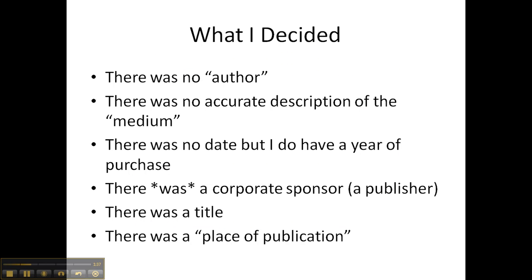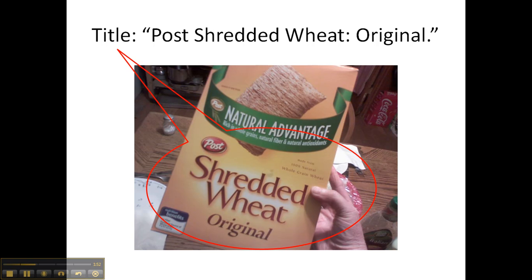And then I looked at the top and the bottom of the box. What I decided from my research of the box was that there was no author, there was no accurate description of medium, there was no date but I do have a year of purchase, there was a corporate sponsor or publisher, there was a title, and there was a place of publication. I decided the title is "Post Shredded Wheat" with a subtitle: Original.